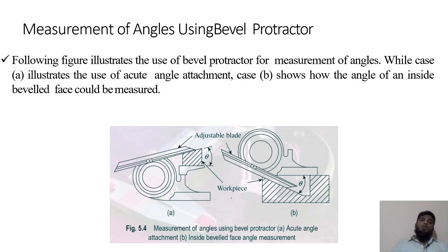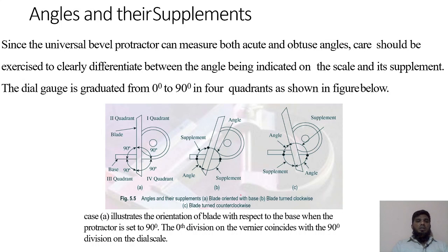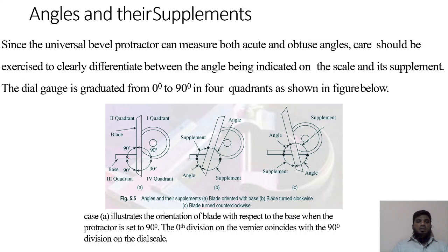The adjustable blade can measure angles in different quadrants: first, second, and fourth. This side is the acute angle; this is the obtuse angle — the total angle more than 45 degrees. For 90 degrees, the horizontal surface stays perpendicular. The universal/vernier bevel protractor can measure both acute and obtuse angles. Care should be taken to clearly differentiate between the angle indicated on the scale and its supplement. The dial gauge is graduated from zero to 90 in four quadrants.